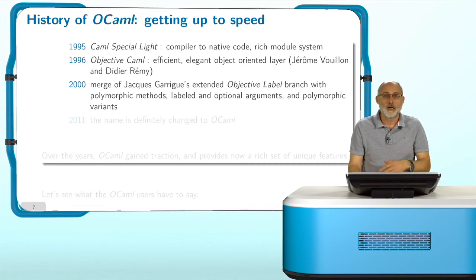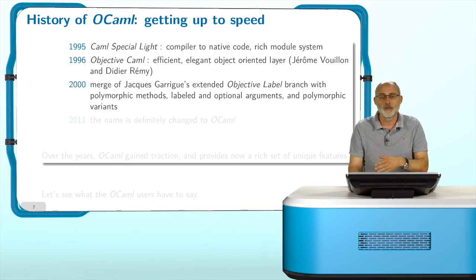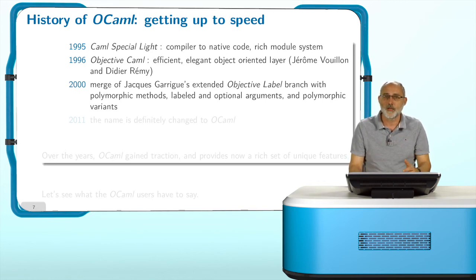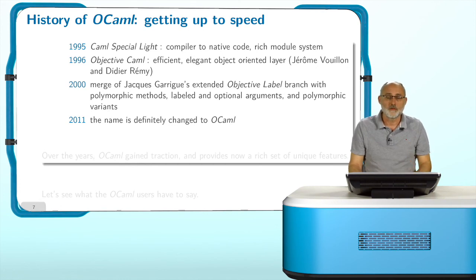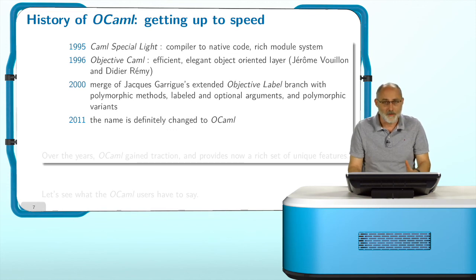In 2000, other features arrived. Jacques Garrigue was maintaining a branch called Objective Label, which was merged into the system, adding polymorphic methods, labeled and optional arguments, and polymorphic variants — along with many other things we will skip today. In 2011, the name was definitively changed and standardized to OCaml, and now you know where this all comes from.